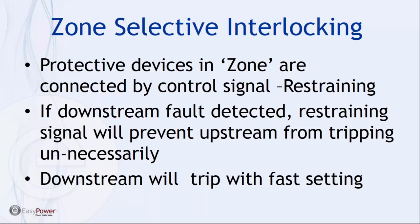The first protective scheme I want to talk about is zone selective interlocking (ZSI). It's been available for some time from several manufacturers. The theory is that we electrically connect several upstream and downstream breakers with a restraining control signal. This permits the upstream breaker to receive an alert that the downstream breaker has identified a fault and expects to trip — consequently the upstream breaker will wait a certain amount of time to verify that the downstream breaker will trip. This allows better arc flash protection and selective coordination without taking the whole system down on a localizable fault.